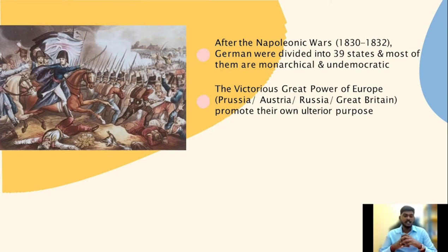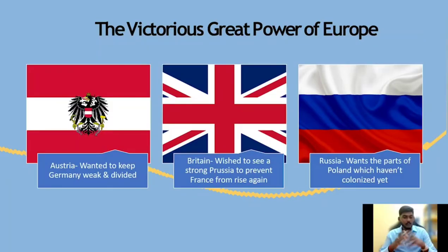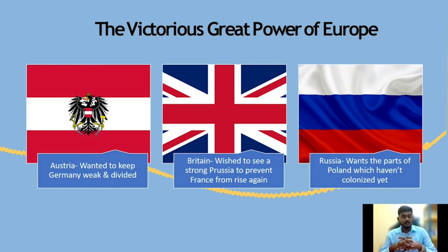Most of the monarchs were almost all democratic. The victorious great powers of Europe manipulated Germany to promote their own ulterior purposes. Austria wanted to keep Germany weak and divided. Meanwhile, Britain wished to see a strong Russia so it could prevent France from rising again. Russia desired for itself the part of Poland not yet seized by Germany and Austria.